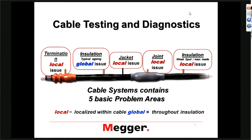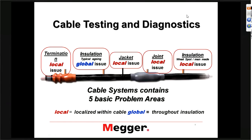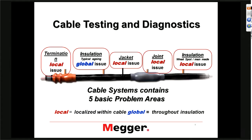We'd like to talk about partial discharge testing and Tan Delta testing and how they can be utilized in increasing reliability in cable networks. If we look at the first slide, looking at a piece of cable, there are five areas that are of concern. Starting from left to right, we see the terminations. Terminations can present a local issue in terms of cable reliability.